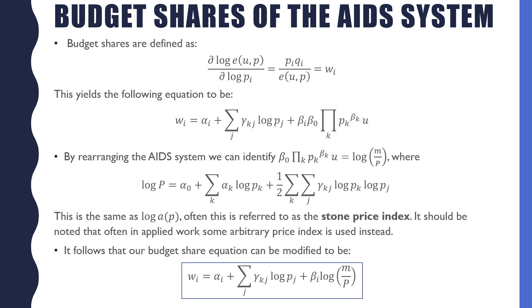The budget shares are defined as the partial derivative of our logged expenditure function with respect to the log of the price of good i. That's equal to our budget share of good i. This yields our equation to be w_i equals alpha_i plus the summation of gamma_kj times log of p_j plus b_i times b_0, which is times the product of p_k raised to the power of beta_k, where k goes from 1 to n, times this u-term.